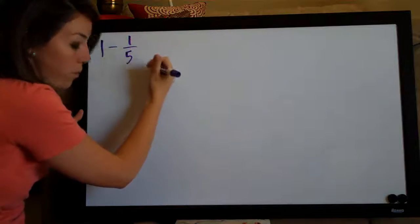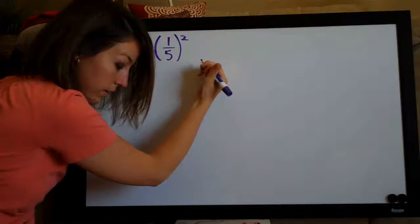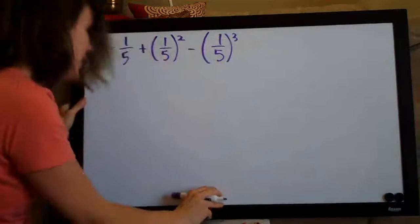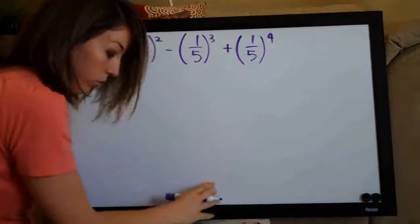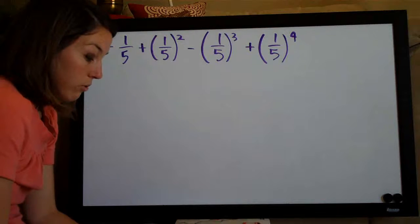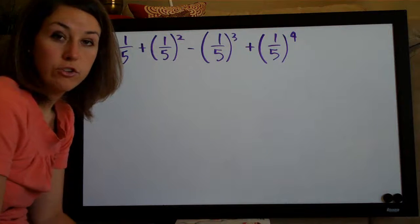Hi everyone! Welcome back to integralcalc.com. We're doing another infinite series problem today. We're given the following series: 1 minus 1/5 plus 1/5 squared minus 1/5 cubed plus 1/5 to the fourth. We are asked to determine whether or not this infinite series converges or diverges, and if it does converge, to find the sum of the series.